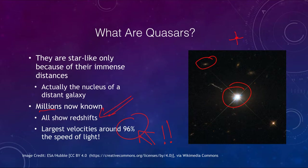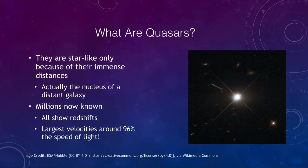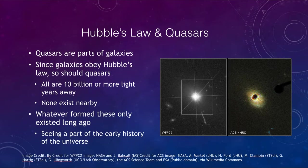This means these are things that existed very early in the history of our universe. Since quasars are parts of galaxies and galaxies obey Hubble's law, so should the quasars. Based on our measurements, every single one of these is at least 10 billion light years away. Our universe is 14 billion years old, so these objects are from the very first couple of billion years of the universe. There are none of them nearby. Whatever formed these only existed long ago, and observing them is a way to look at the early history of our universe.